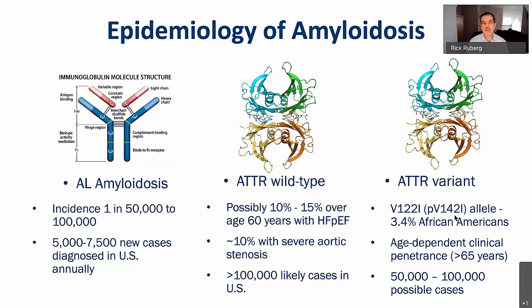It's really important to understand the disparity between these diseases. AL is very important but unlikely to be commonly encountered, whereas ATTR amyloidosis will almost definitively be encountered in common cardiology practice.